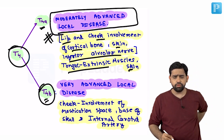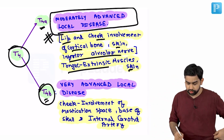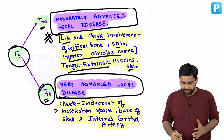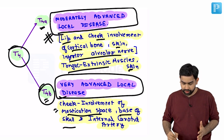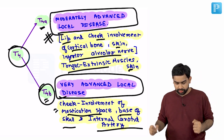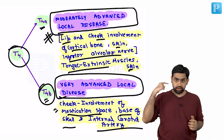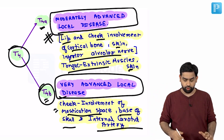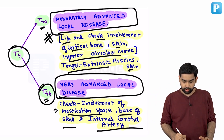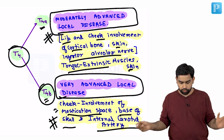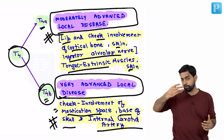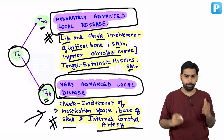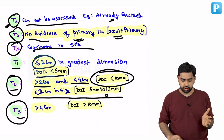T4B is very advanced local disease involving the masticator space, base of skull, or internal carotid artery. These structures cannot be removed — for example, you cannot cut the base of skull in half and remove it. So T4B is considered inoperable.